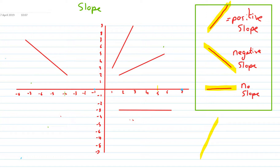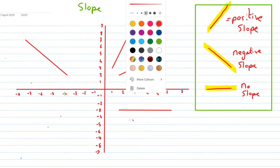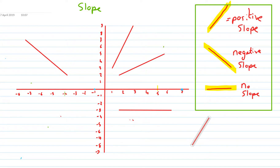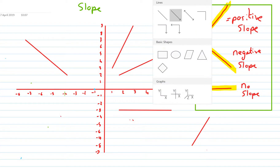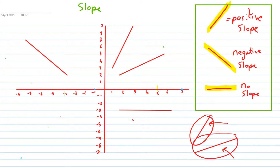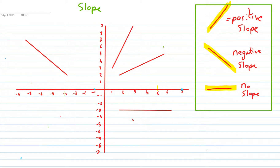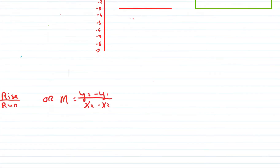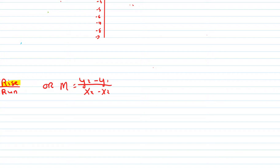The steeper the line — so if we have a line going up at a steep angle versus a line going up at a shallower angle — we can say the steeper line will have a steeper slope than the other. The number representing the steeper slope will be a higher number. There are two ways of getting the slopes of lines: we can use the rise over run method, or we can use the formula method.